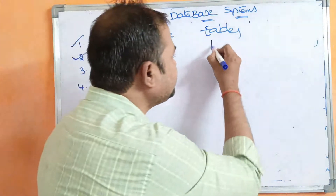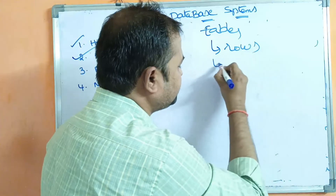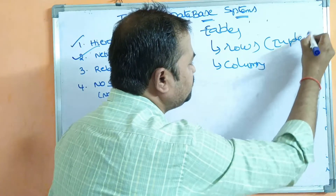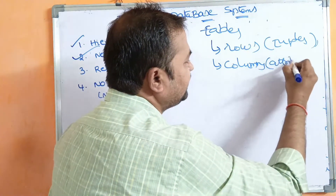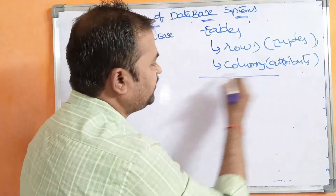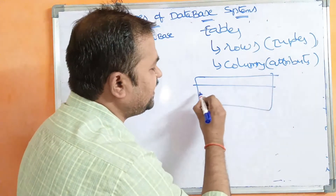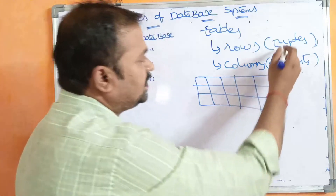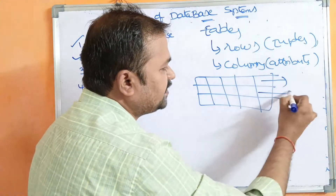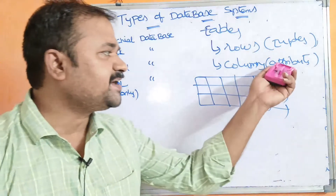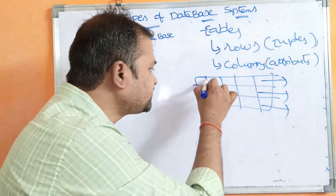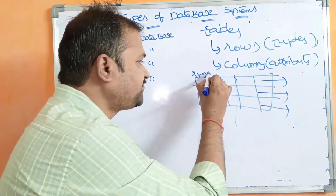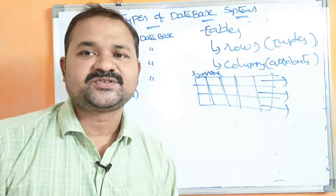A table is a collection of rows and columns, where rows are called tuples and columns are called attributes. For example, one column could be roll number — that is one attribute — and another column could be name, which is another attribute. Each row in the table represents a tuple.